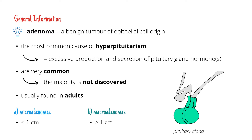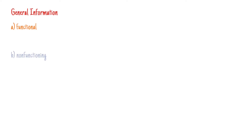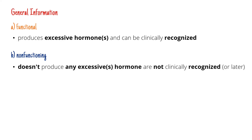We can also divide them into functional and non-functioning adenomas. Functional adenomas are tumors that produce an excessive amount of hormone, or sometimes even two hormones, and because of that they can often be clinically recognized. Non-functioning adenomas don't produce any hormone, so they often can't be clinically recognized.